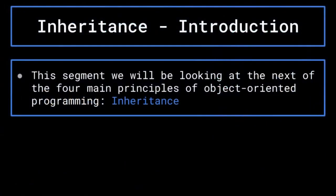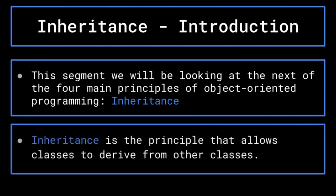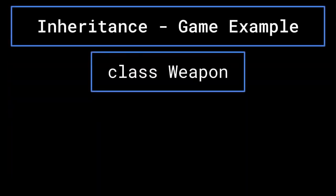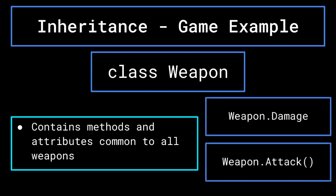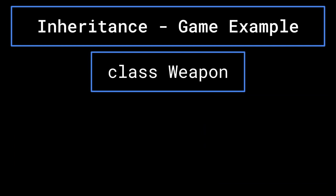This next section will be tackling inheritance, the third of the main principles of object oriented programming. Inheritance is the principle that allows you to derive classes from other classes. Classes can inherit certain methods and attributes from another class. Let's look at an example. Let's say you are programming a game in which the player has access to weapons to fight their enemies. You may establish a weapons class that contains many of the pertinent attributes and methods common to weapons — for instance, an attribute that represents the damage that the weapon deals, and a method that deals damage to an opponent when called.